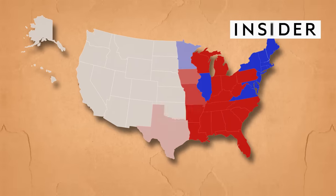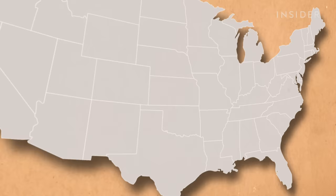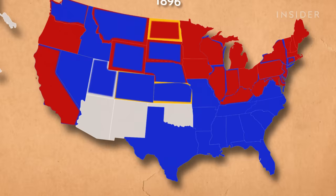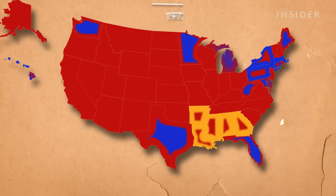You've seen this map before. The edges are blue, the middle is red, and everyone is mad at Florida. But it hasn't always been that way. New parties have come and gone. New states expanded the map, then shifted from the left to right and back again. And who was allowed to vote has transformed this map over the last 231 years. Here's how the U.S. has voted in every presidential election since 1789.